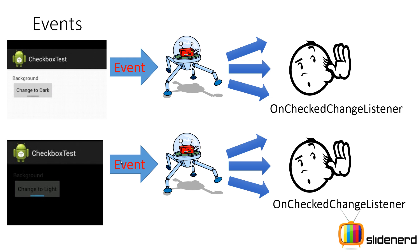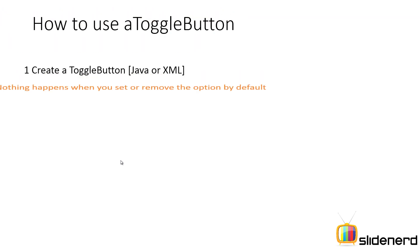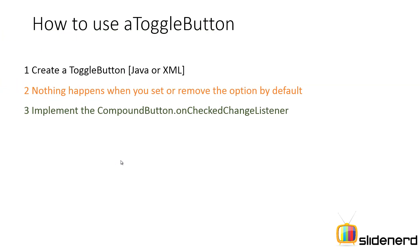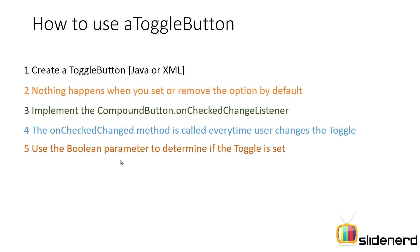Let's look at the steps involved in creating a toggle button. First step: create the toggle button inside Java or XML. At this point when the user tries to set or unset it, nothing happens. So you need to implement the CompoundButton.OnCheckedChangeListener, which is responsible for writing code that determines what happens when the button is set or unset. This has a method called onCheckedChange inside which you write your code — it gets called every time the user changes the toggle button. It also has a boolean parameter that you can use to determine if the button is set or unset.